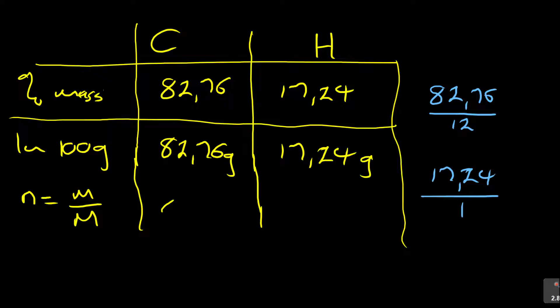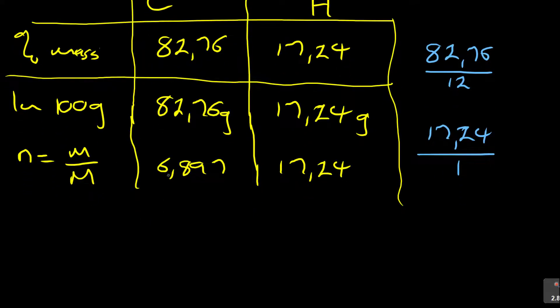So I've got 6.897. And then here it will be 17.24. Now remember, when you're looking at empirical formula, you divide by the smallest number. Divide by 6.897, so that you've got 1. This is now the ratio. Let me not rush myself.